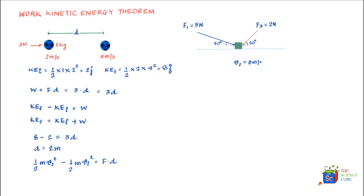As a result of these two forces, the mass undergoes a displacement of 5 meters, and the final velocity is V_f. To clarify: V_initial = 0 meters per second, and the final velocity after a displacement of 5 meters is V_f.